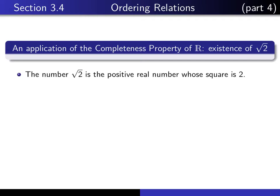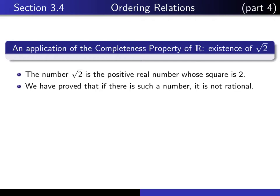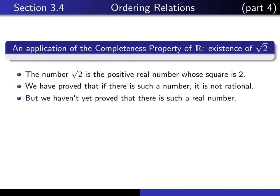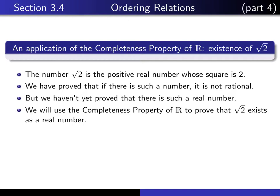By definition, the number square root of 2 is the unique positive real number whose square is 2. We proved earlier on in the course, as a consequence of the well-ordering property of the natural numbers, that if there is such a number, it can't possibly be rational. But we haven't yet come to grips with the question of whether there actually exists a real number whose square is equal to 2. We're going to use the completeness property of the set of real numbers to prove that it actually exists.